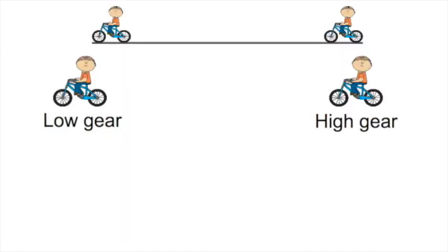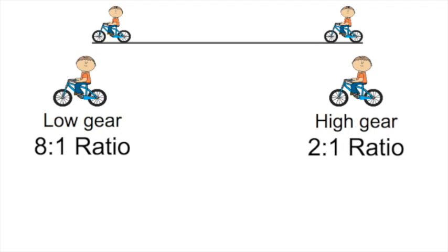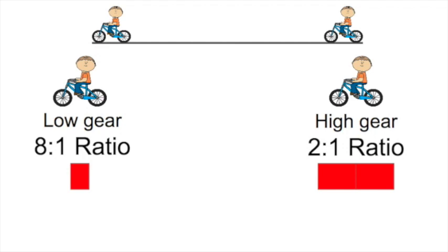Let's think about our bike again. Say our low gear is an 8-to-1 ratio and our high gear is a 2-to-1 ratio. That seems a little backwards, but if you think about the amount of work being done, our low gear only has to do a low amount of work — one half unit — to move our bike. Our high gear has to use a much higher amount of work. In auto racing, low gears are often referred to as short and high gears as tall, so you might hear someone say they went to taller gears, meaning they went to a higher gear ratio.